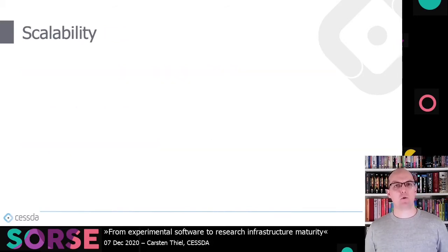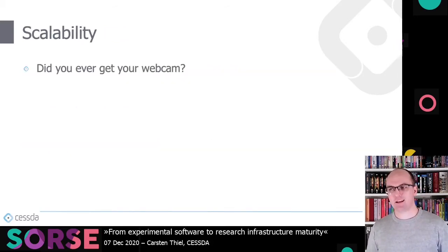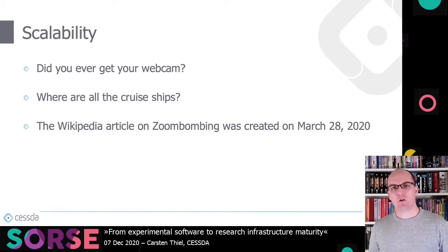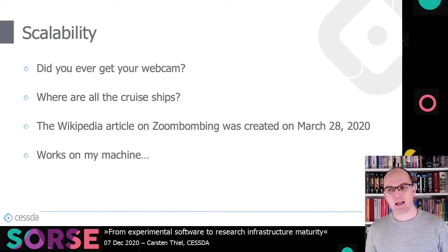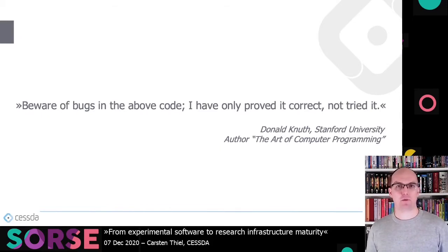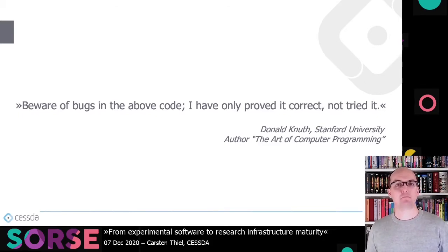So let's talk about the more specific problem: scalability. Works on my machine is one of the most common problems of scalability, where things work on the developer's machine but not on anybody else's. You may have read this quote by Donald Knuth, author of The Art of Computer Programming and inventor of TeX: 'Beware of the bugs in the above code. I've only proved it correct, not tried it.' It's generally taken as a joke, but sometimes I fear people do actually live by it.